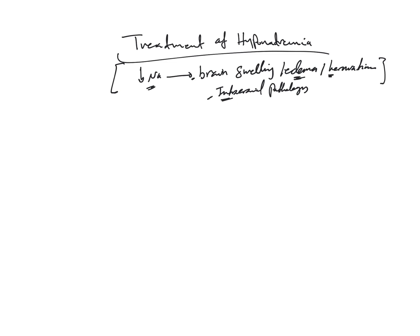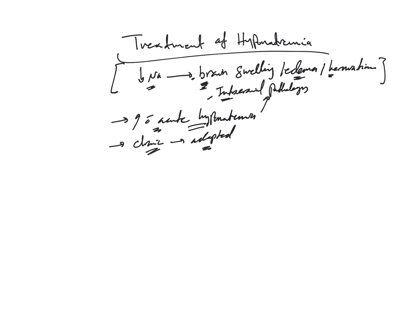Hyponatremia can lead to these manifestations and complications, and patients can die from that. These complications will be higher with acute hyponatremia, because the brain cells are surprised and don't have time to adapt — they suddenly become swollen. Acute hyponatremia is much more dangerous compared to chronic, where brain cells slowly get swollen and become adapted over time.